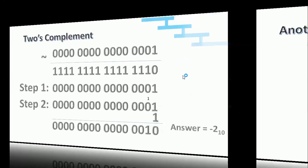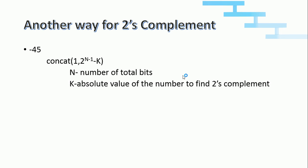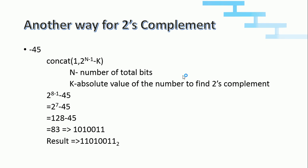There is another way of doing 2's complement. We want to write minus 45 in binary. We use the formula: concatenate 1 with (2^(n−1) − k), where n is the total number of bits and k is the absolute value of the number. Considering an 8-bit value, n = 8, so 2^(8−1) − 45 = 2^7 − 45 = 128 − 45 = 83. Write 83 in binary representation, then prepend 1 to that value. The result is 11010011 — this is the binary representation of minus 45.